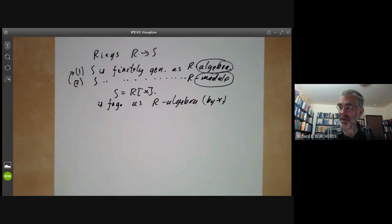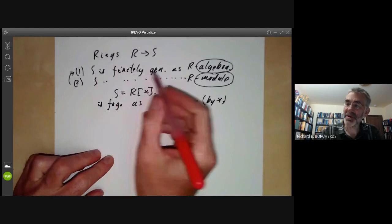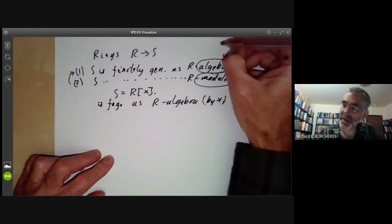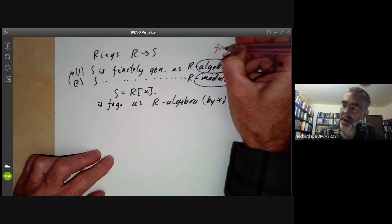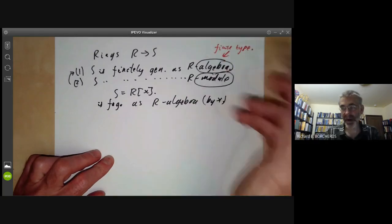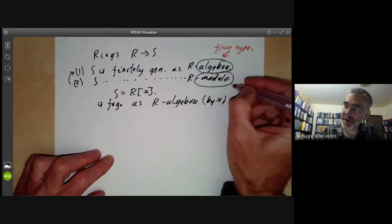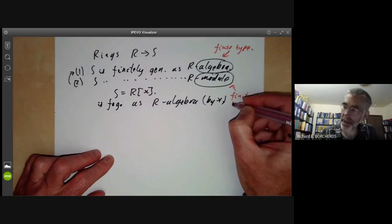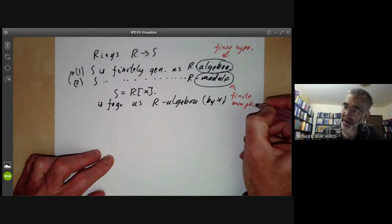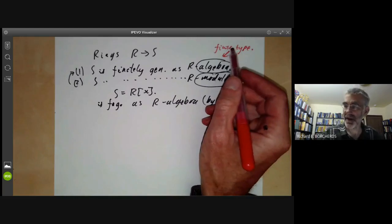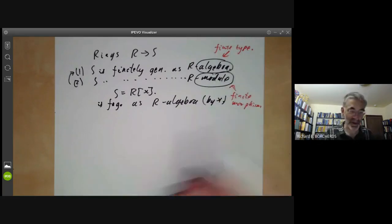For schemes, being finitely generated as an R-algebra corresponds to morphisms of finite type or locally of finite type. Being finitely generated as an R-module corresponds to finite morphisms. The terminology is a bit confusing because finite type and finite morphisms are quite different.